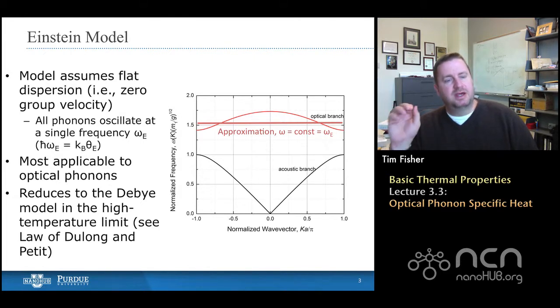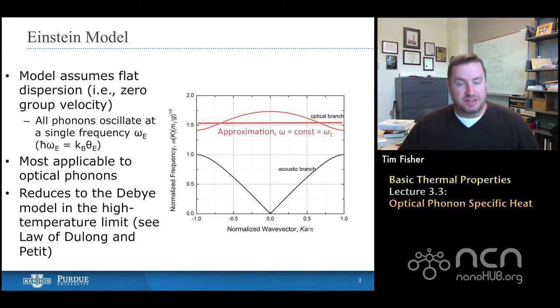The most important metric here is the Einstein frequency, or equivalently, the Einstein temperature that's defined. So if we're going to define a constant frequency, all of the phonons are oscillating at one frequency, regardless of their wavelength, that frequency is shown here as a flat dispersion curve, meaning it doesn't have any group velocity. So these optical phonons in this approximation cannot transport heat, they can only store it.